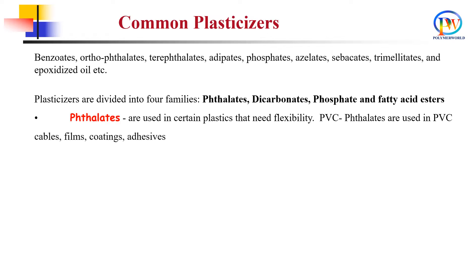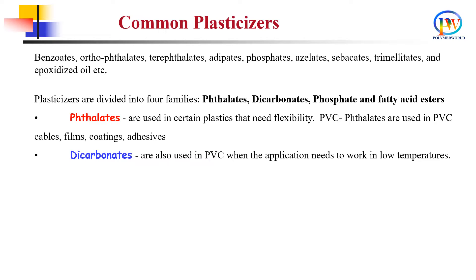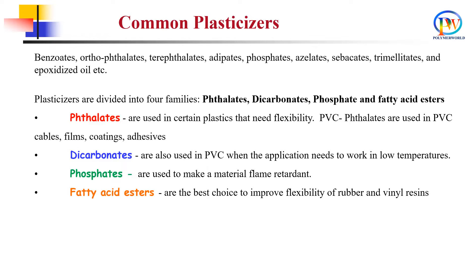Phthalates are used in certain plastics that need flexibility, like PVC. Dicarboxylates are used in PVC when the application needs to work at low temperature. Phosphates are used to make a material flame retardant. And fatty acid esters are added to rubber and vinyl polymers to improve flexibility.